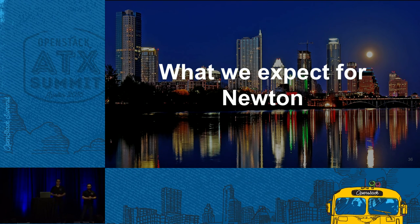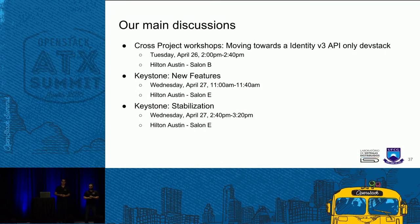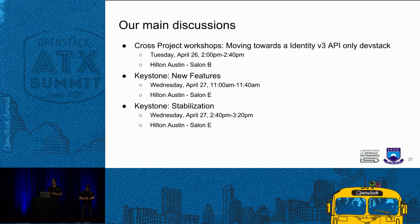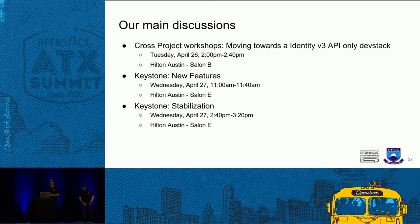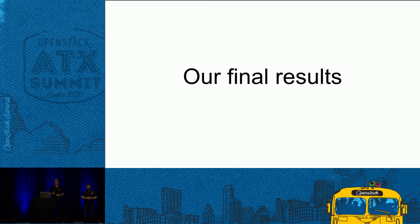We are not here just to give this talk — we have a lot of things to do. Me and Henrique will be leading a design session tomorrow as a cross-project workshop. Keystone has deprecated the v2 API and is moving to the identity v3 API, which has a lot of great features, and we will discuss that. On Wednesday, me and Henrique will be at the Keystone new features session discussing Reseller and other features like Project Tags operations. And we'll also be at the Keystone stabilization session discussing Fernet tokens, which is a new feature on OpenStack.